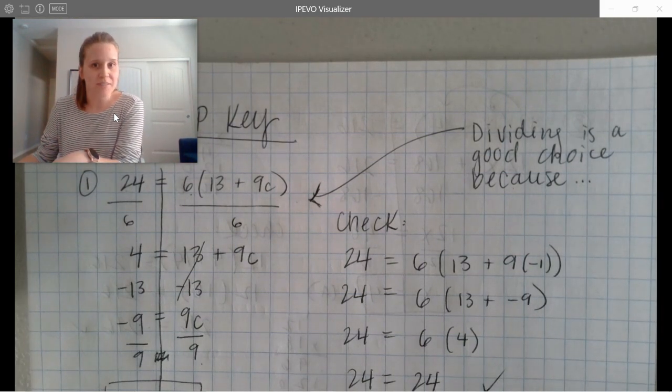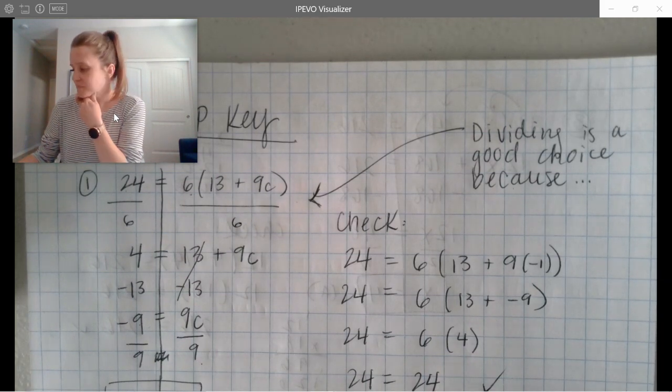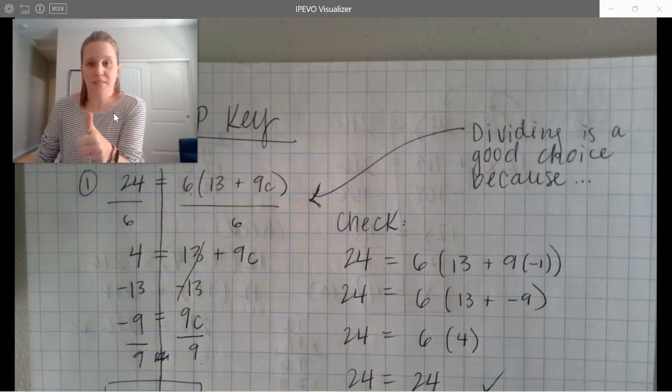Dividing is a good choice here because 6 goes into 24 evenly. In some problems I might have like what if this was a 7, could I do 24 divided by 7 easily? No I couldn't, right, because 7 is not a factor of 24. But because 6 is a factor of 24, it goes into 24 evenly, then dividing becomes really simple, a lot more simple than multiplying 6 times 13 and 6 times 9C. Your question of the day is right here. I want you to answer the question why is dividing a good choice in question one. So your answer could sound like dividing is a good choice in number one because and then you type your answer. Go ahead and pause the video now and answer your question of the day.